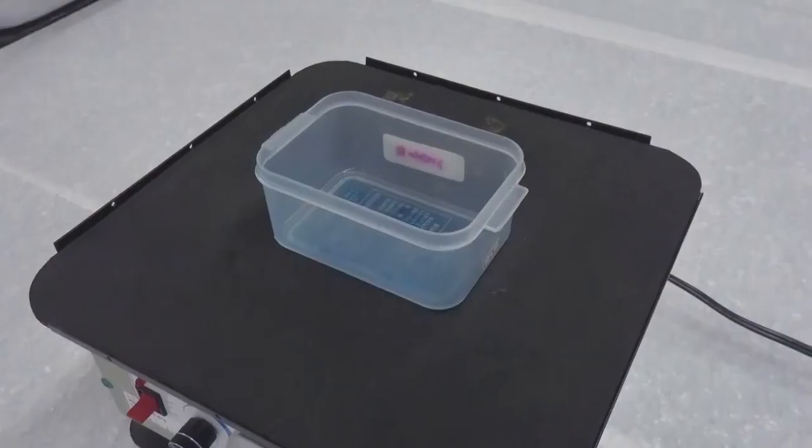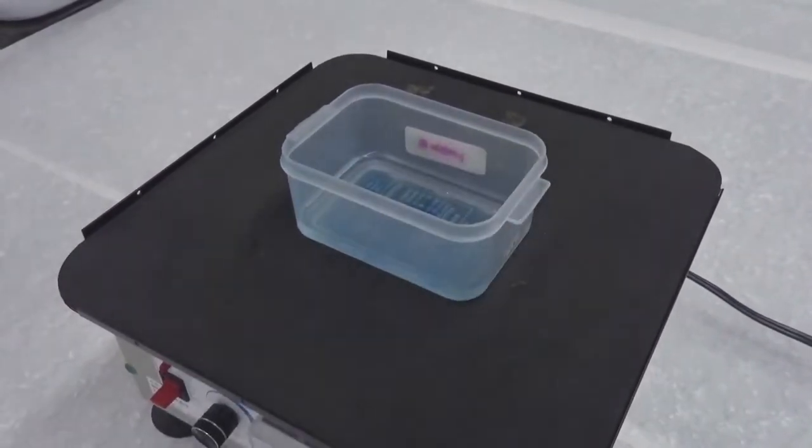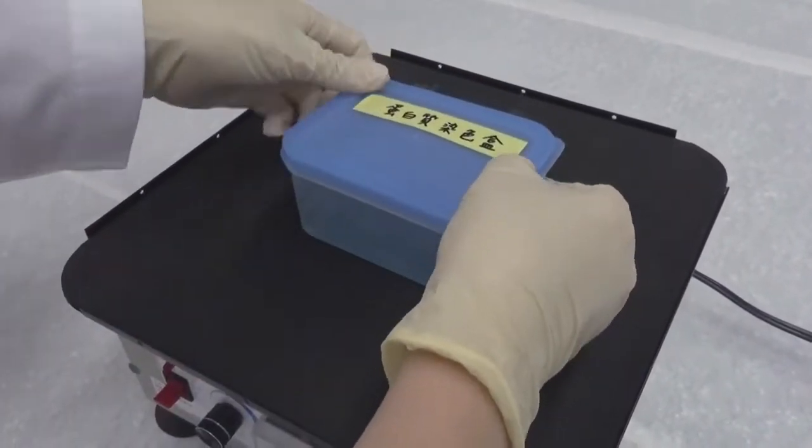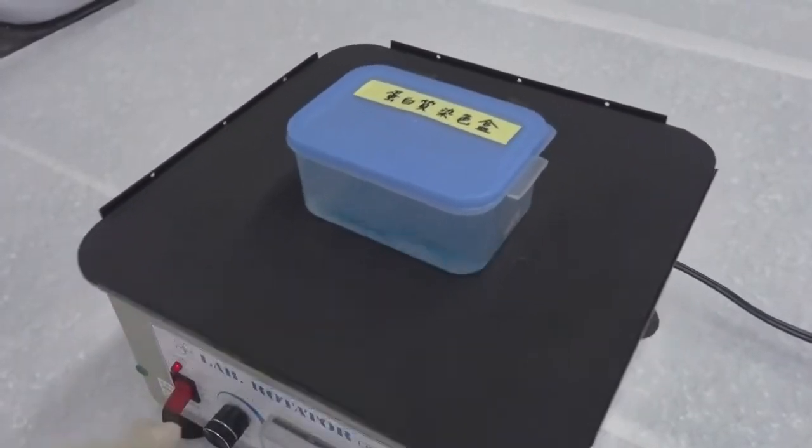Pour the liquid waste into a designated container. You may wash the gel with deionized water a few more times with shaking until the protein bands become distinct against a transparent gel background.